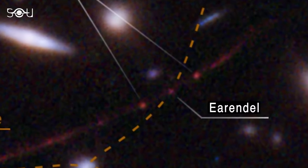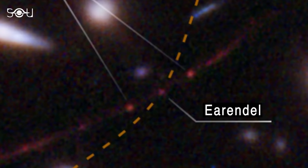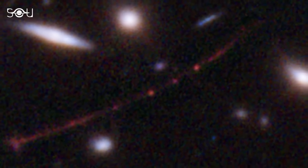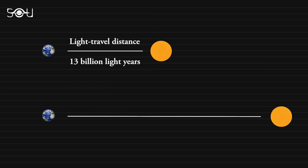Earendel is so far away that its light has taken 13 billion years to reach us through a cosmic coincidence of line of sight. But this doesn't mean it's 13 billion light years away. The proper distance of this star, which also considers the universe's expansion, is about 28 billion light years.